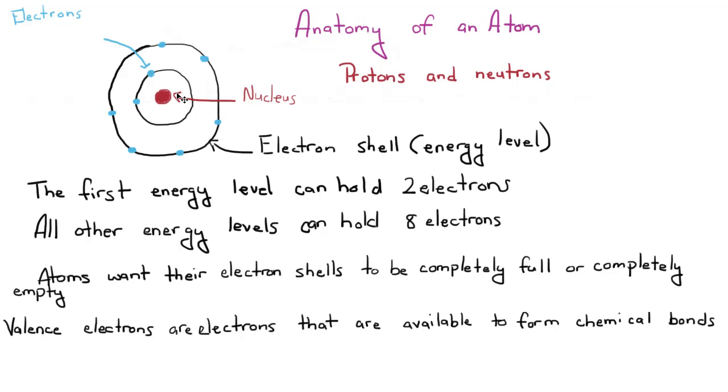The first energy level can hold 2 electrons. The second energy level can hold 8. For all intents and purposes, we are going to say that all other energy levels can hold 8 electrons. This is not exactly true, but don't worry about it.